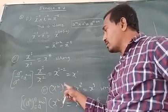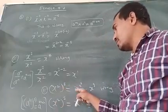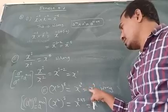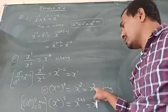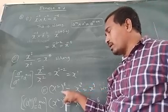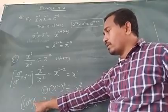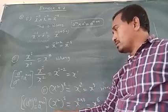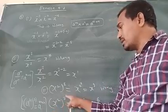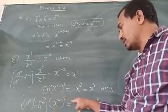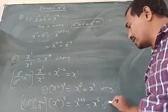Next, x power 2 whole to the power 3 equals x power 8. This is also wrong. What is the suitable exponent formula? a to the power m whole to the power n equals a power m into n. So x power 2 whole power 3 equals x power 2 into 3. That is x power 6 is the right answer.